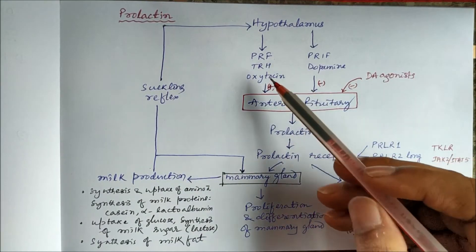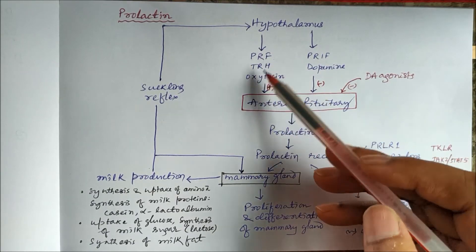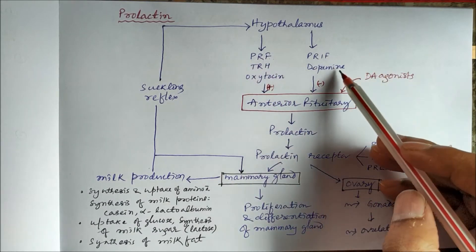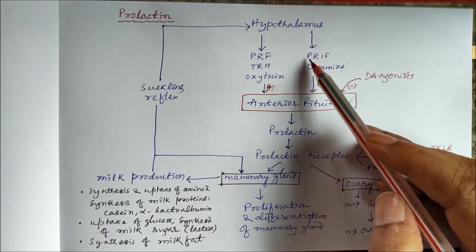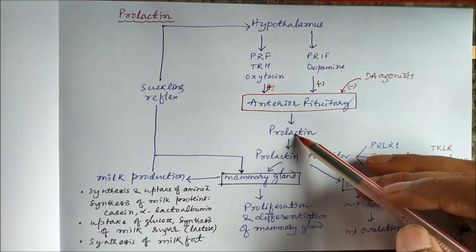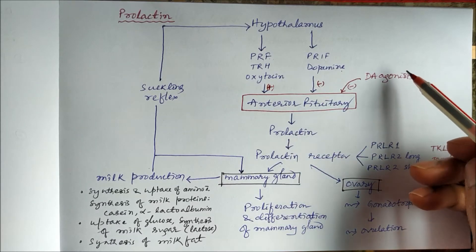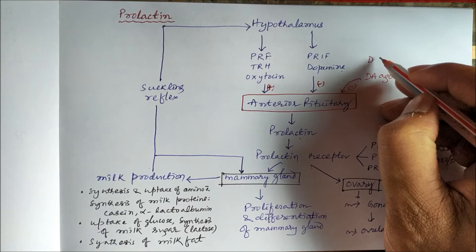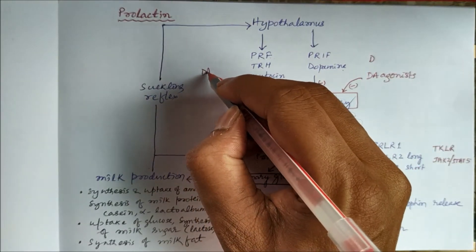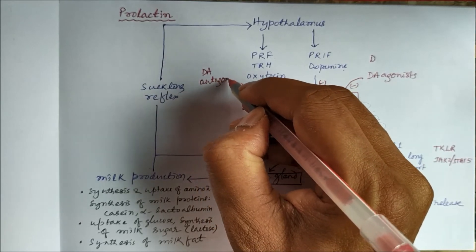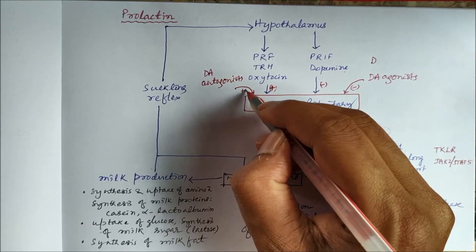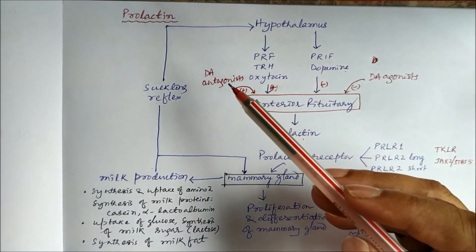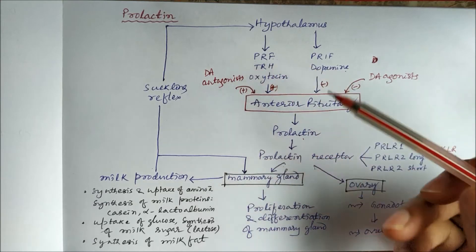Thyrotropin releasing hormone and oxytocin also have the same type of action on the anterior pituitary as prolactin releasing factor. Similarly, dopamine has the same action as prolactin release inhibiting factor — dopamine inhibits the release of prolactin. Dopamine agonists also inhibit prolactin release, while dopamine antagonists increase prolactin release. So dopamine agonists act like PRIF, and dopamine antagonists act like PRF.